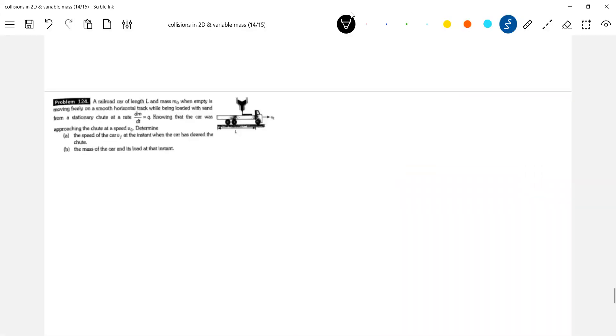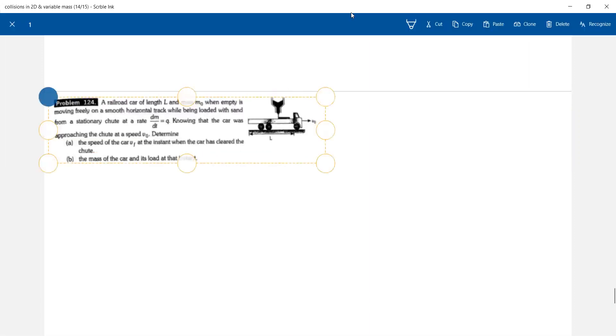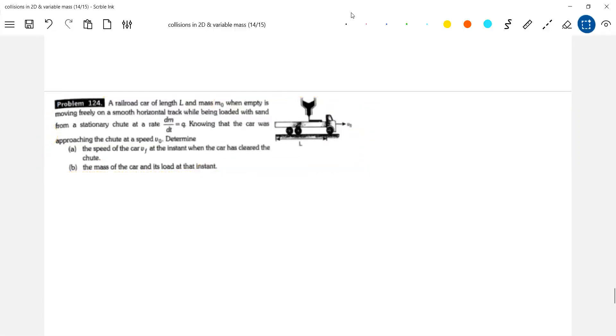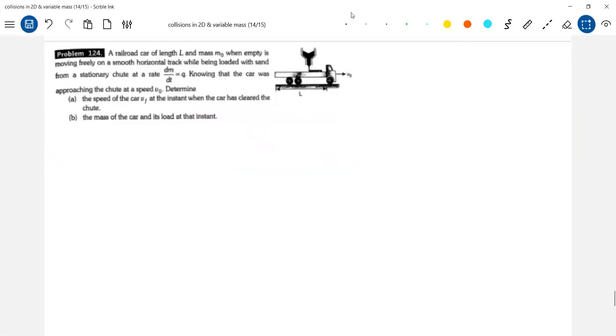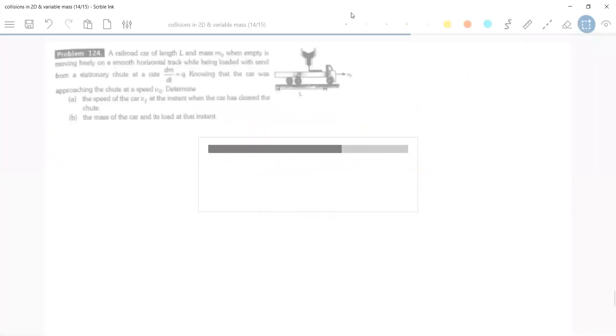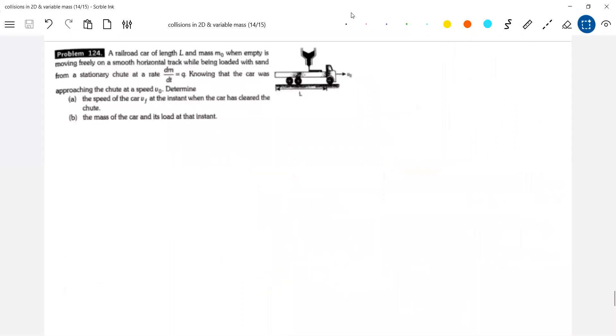Now, take the next one. This you can do it. I'll take the next problem. A railroad of a railroad car of length and mass have not when empty is moving.